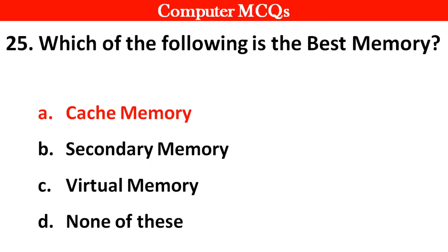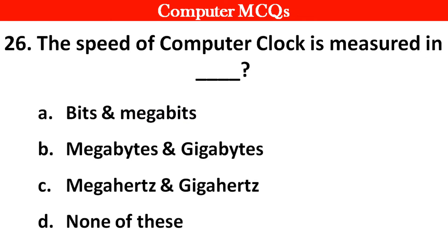Next question: The speed of a computer clock is measured in — Right answer is option C — Megahertz and Gigahertz.